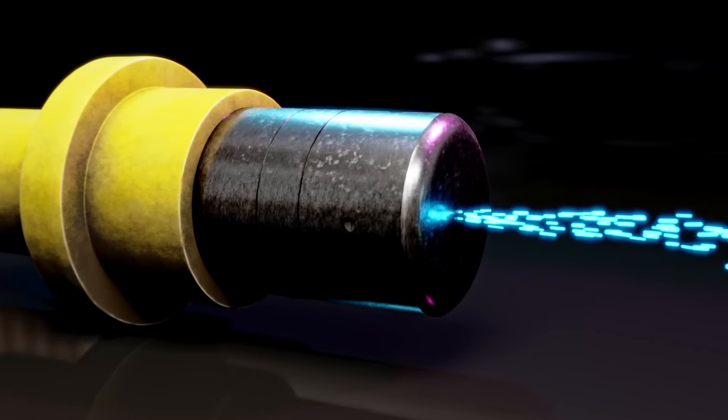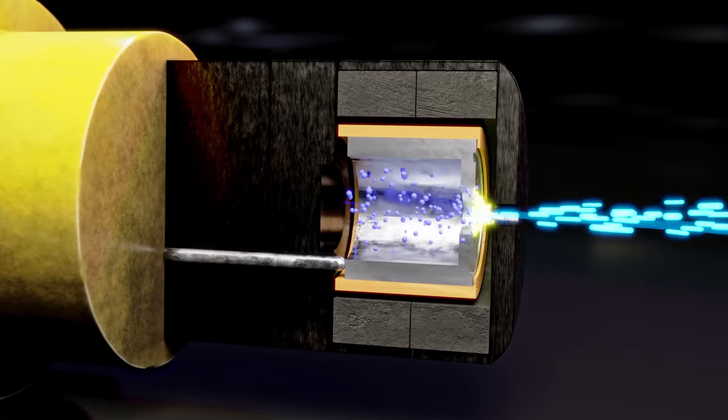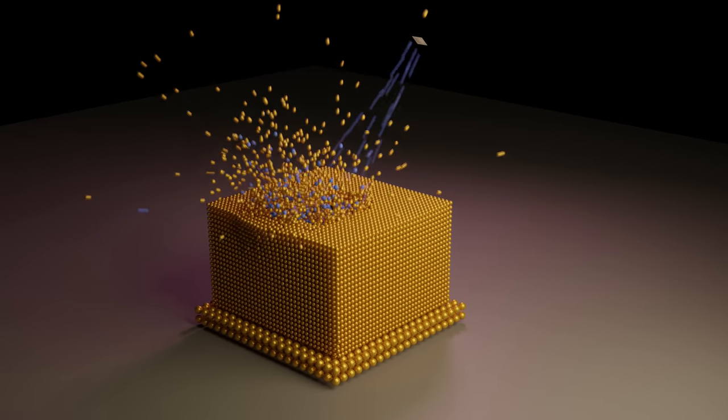Today we're looking at an atomic sand blaster, a device that ionizes gas particles, accelerates them to several kilometers per second, and slams them into an object.